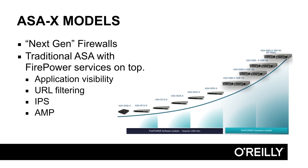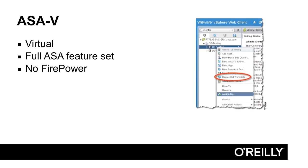The X models range all the way up to the 5585-X, which is really massive and powerful, and in between there are a number of different models, most ending with a 5 and dash-X. There is also a virtual version of the ASA firewall available. It runs exactly the same software and has the same feature set as the traditional firewalls, but it runs virtually on VMware and has no Firepower services.